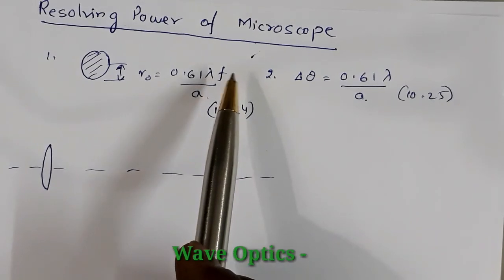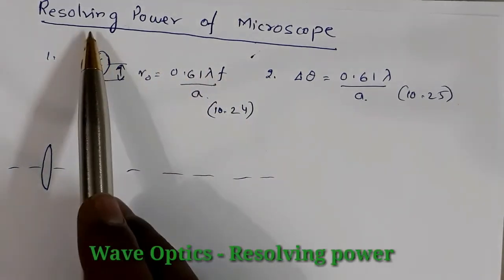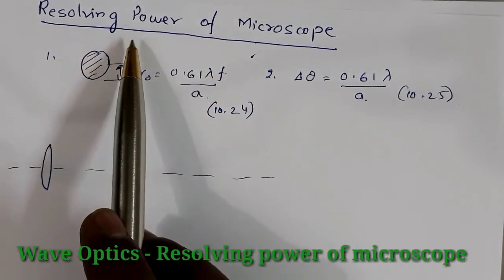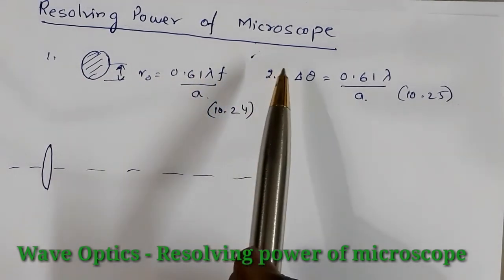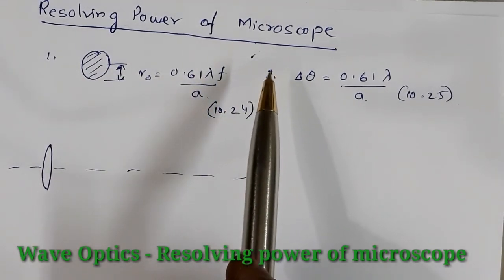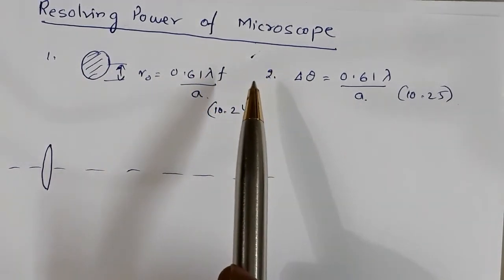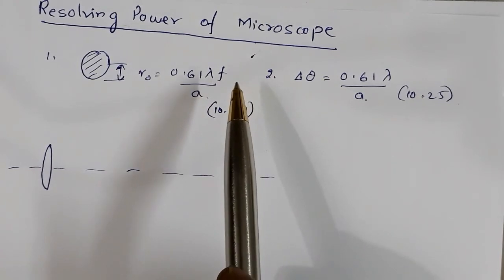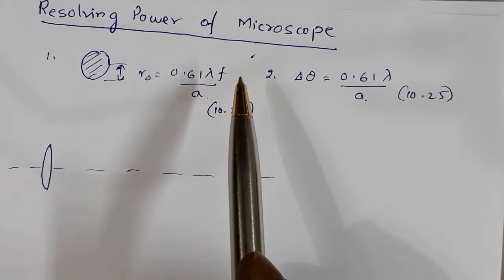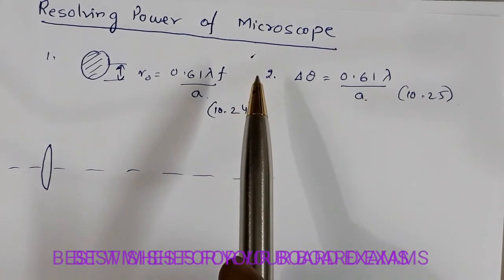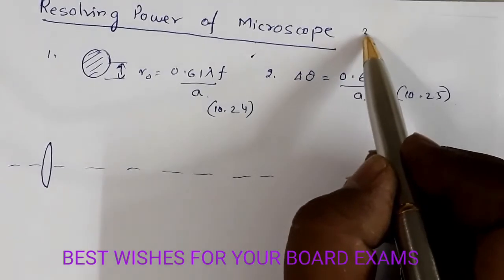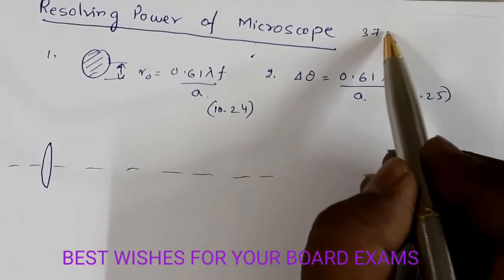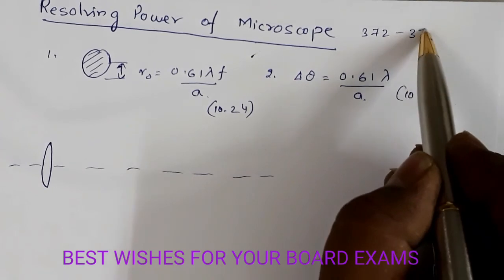Hello students. Today I am going to explain the topic resolving power of microscope — this topic is from the chapter wave optics. After watching this video you must go through the textbook page number 372 to 374.